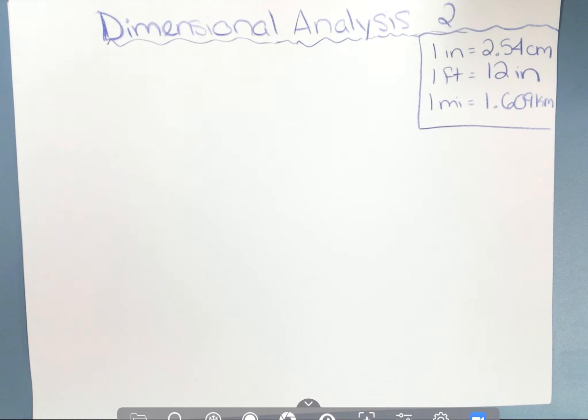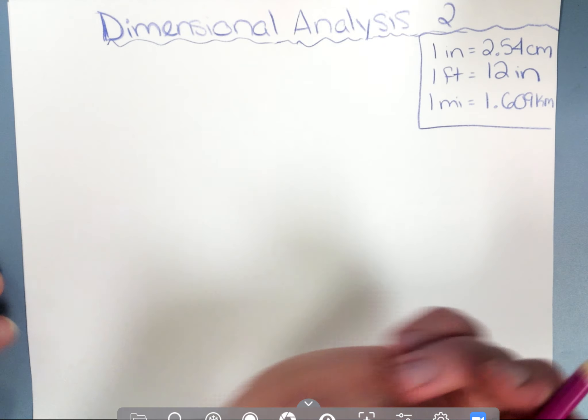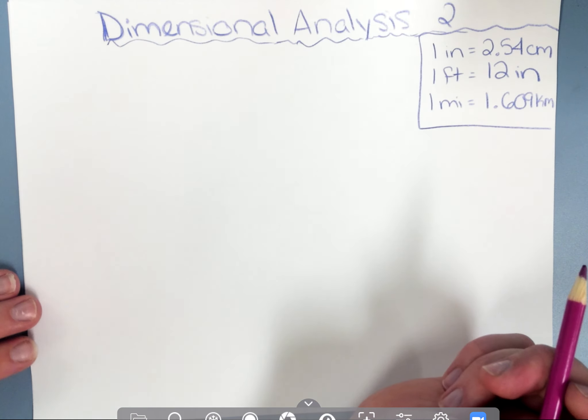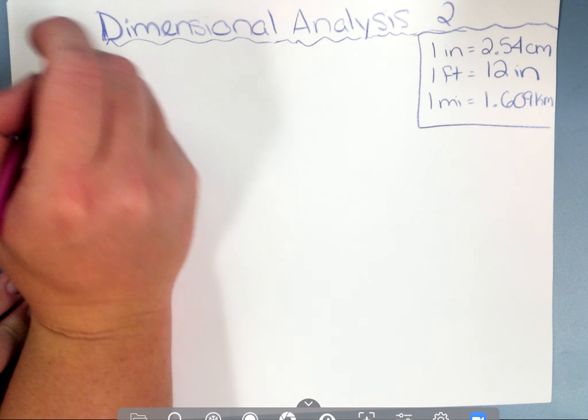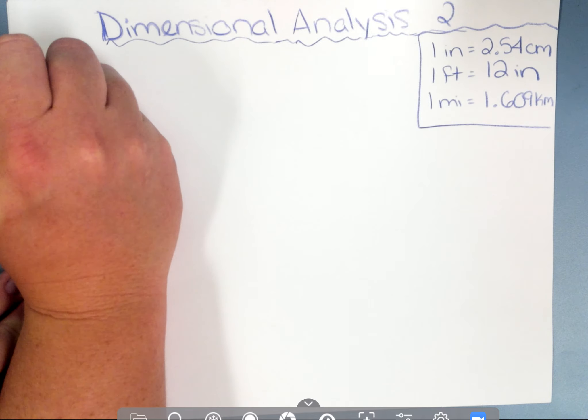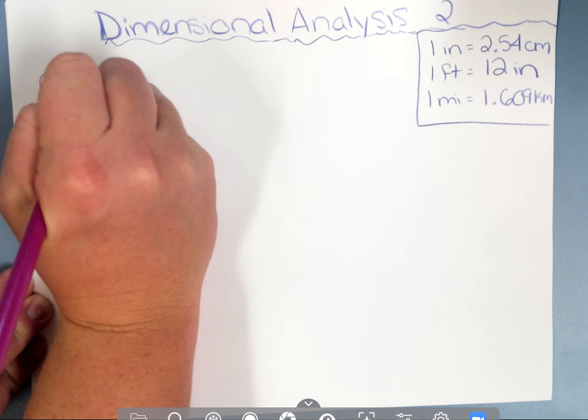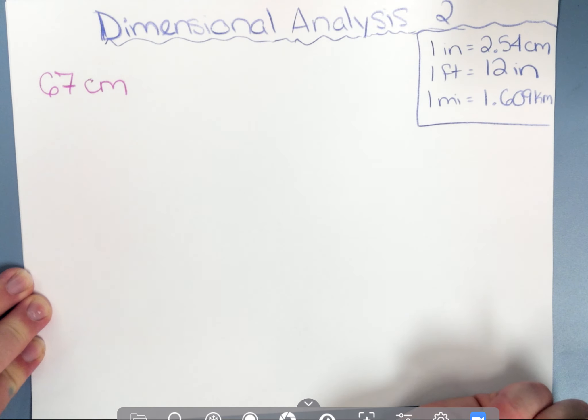We're at different types of dimensional analysis questions. I want to do one that has a solid two steps. If I wanted to know how many feet are in 67 centimeters, I need to figure out which path I'm going to take.